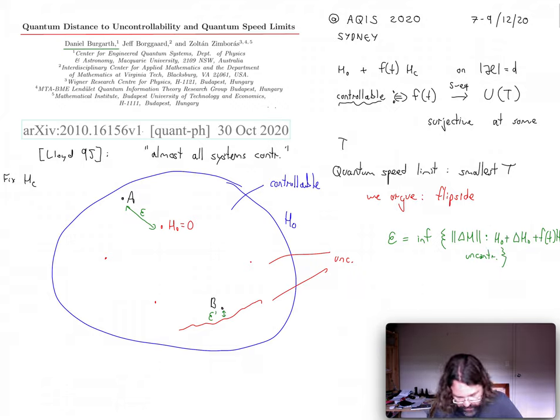Now, obviously, this distance is smaller or equal to H0 because I can always choose my perturbation so that it completely removes this H0 component and thereby makes the system uncontrollable.